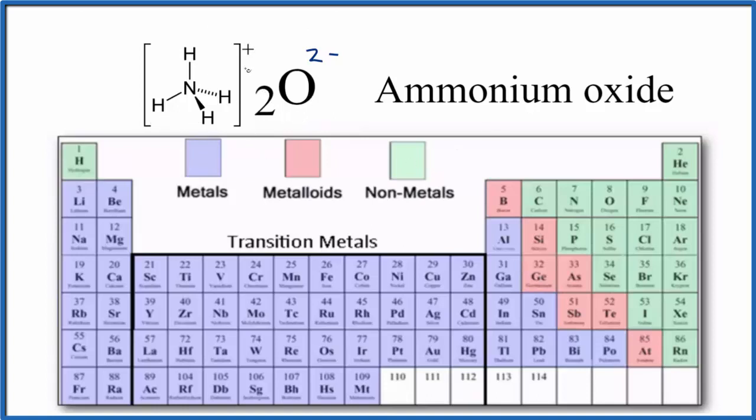And it's an ionic compound because we have the ammonium ion here. We have two of them. Then we have the oxide ion.